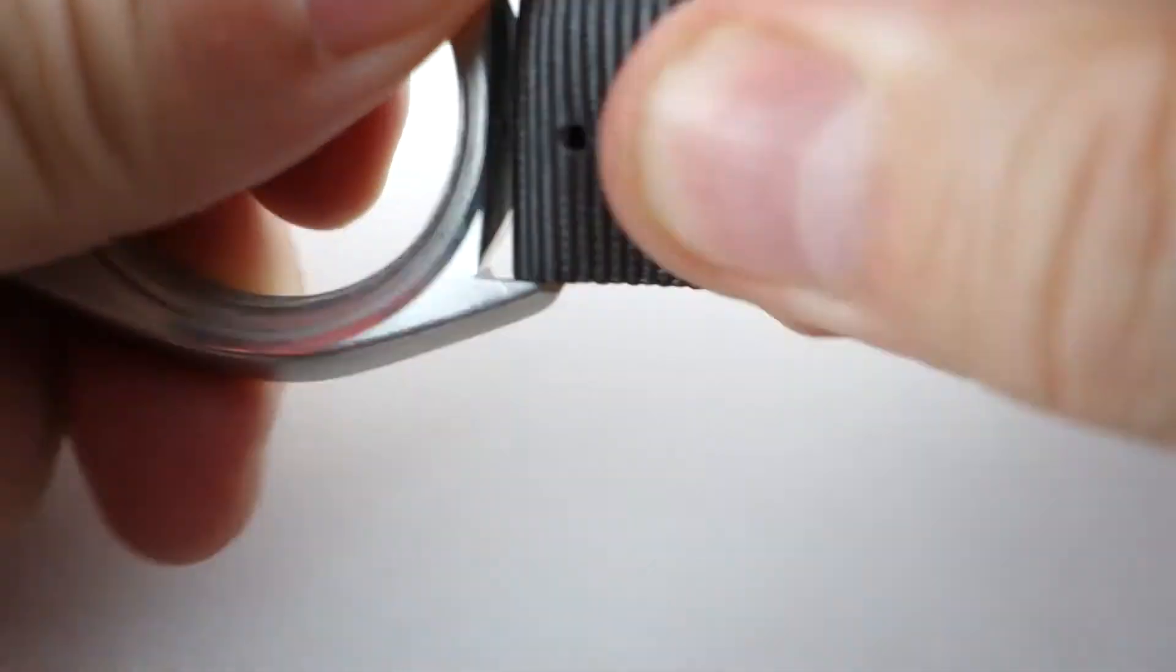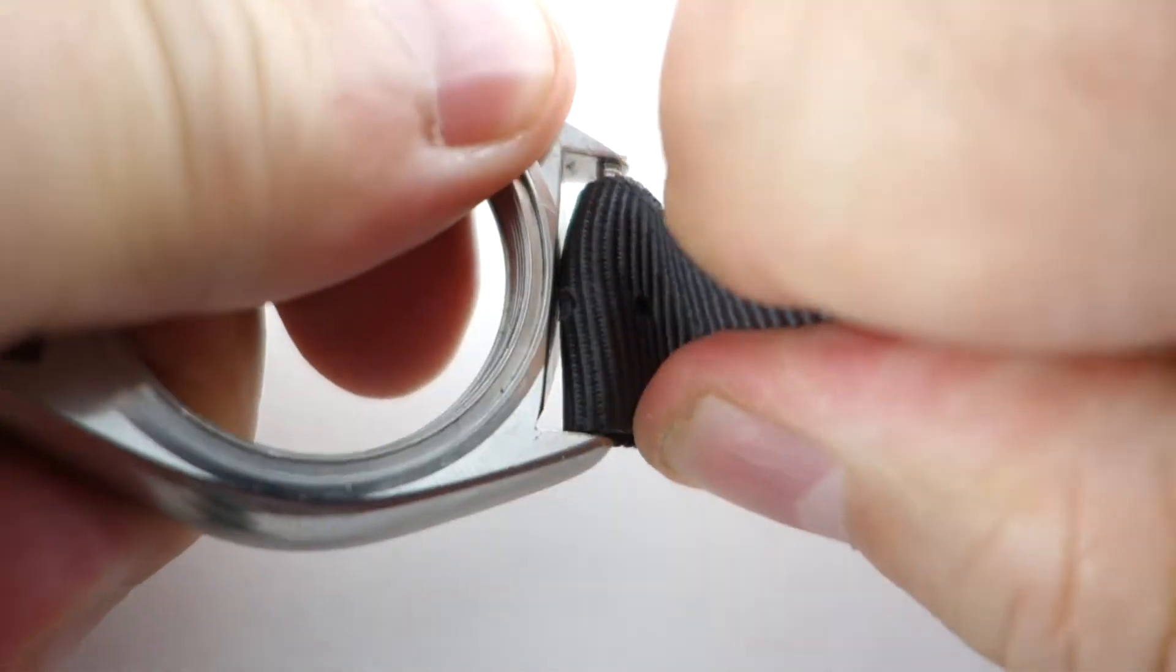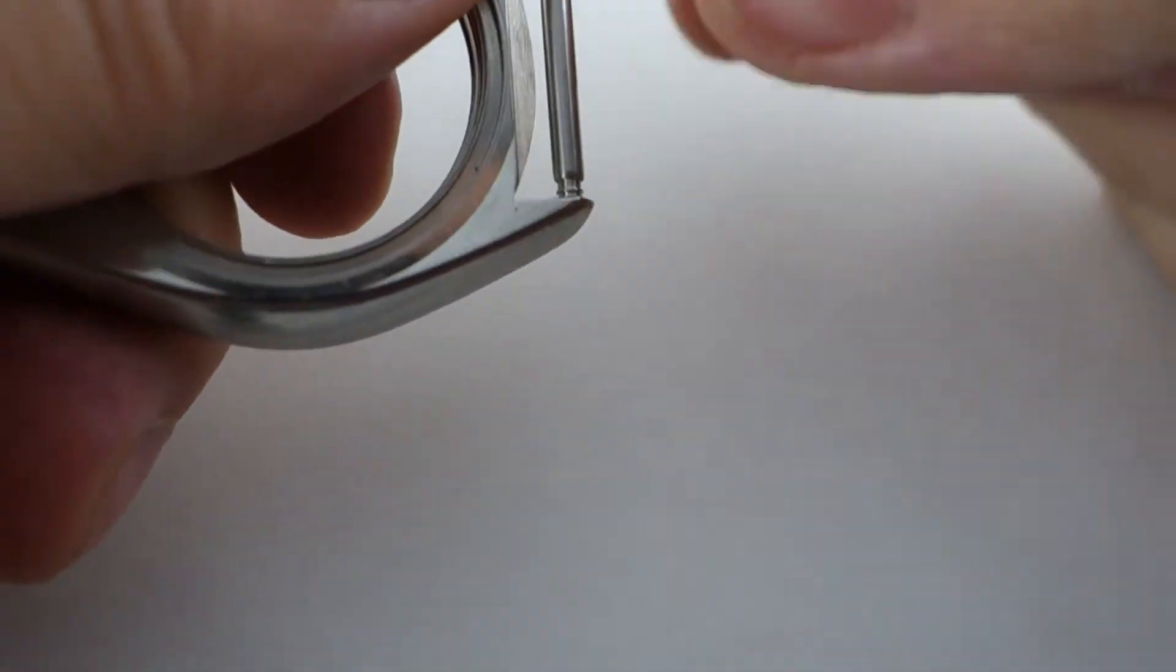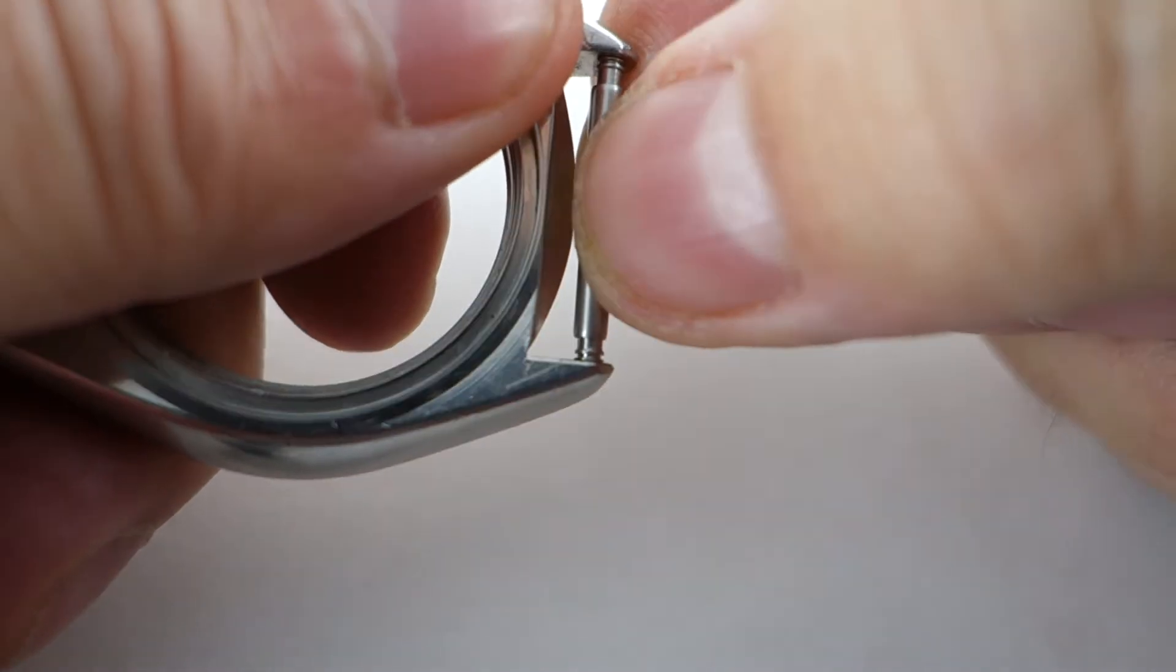So this side is the side that is not worn out, and it is not pulling it free. See that spring bar is nice and tight in there.